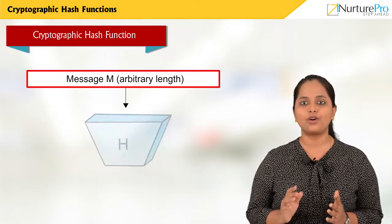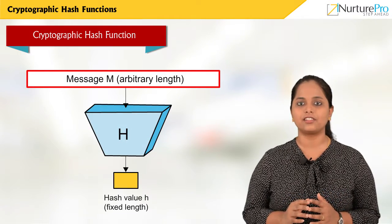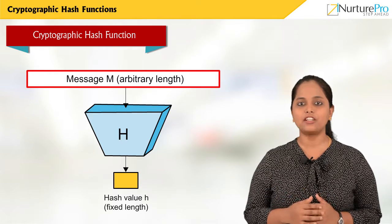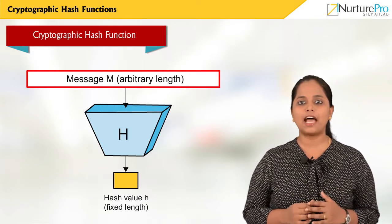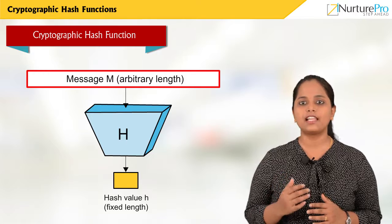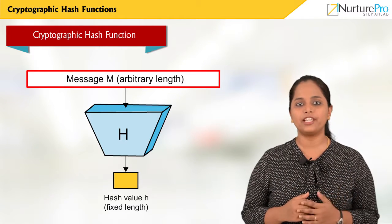Hash values, also known as the message digest, are the values returned by a hash function. The output of the hash function is of fixed length whereas the input is of arbitrary length.